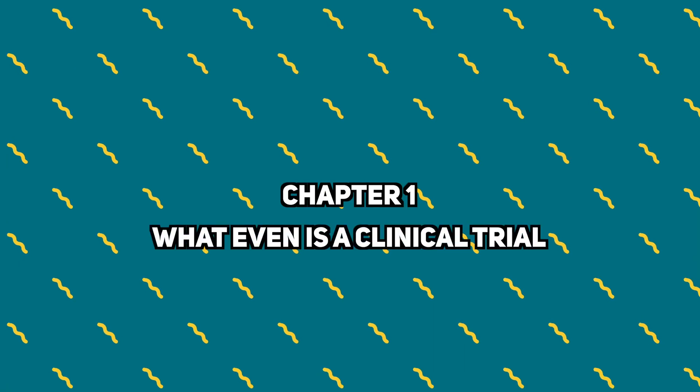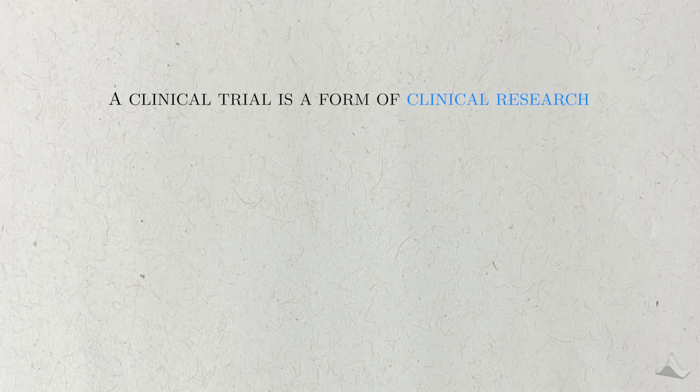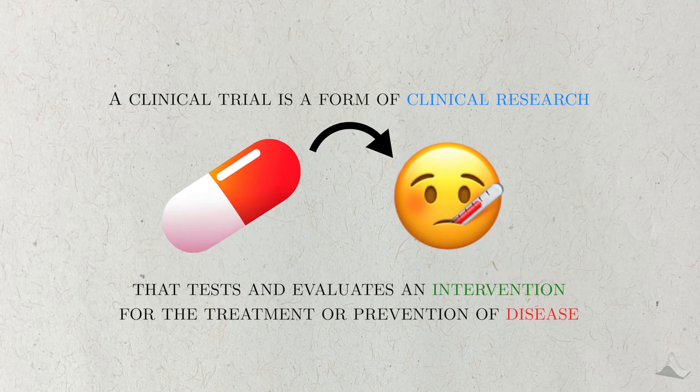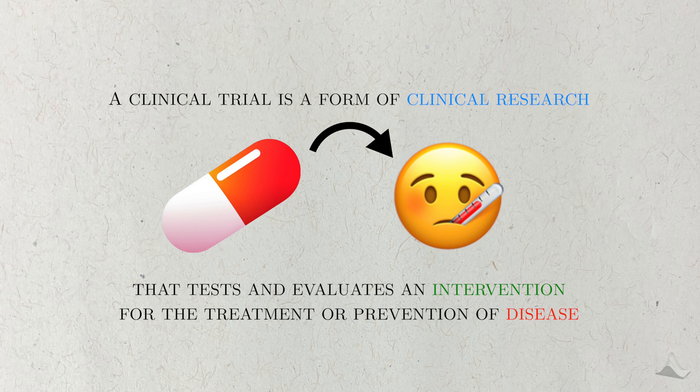What even is a clinical trial in the first place? A clinical trial is a type of clinical research that tests and evaluates an intervention for the treatment or prevention of disease. This intervention could be something like a new drug, a surgery, or something behavioral. For this video, I'll talk as if the intervention was a drug, because that's what I'm most familiar with.